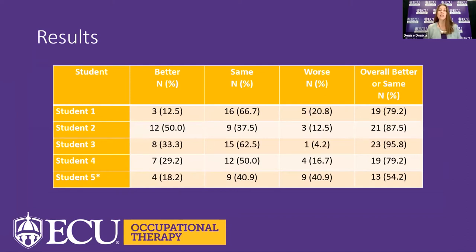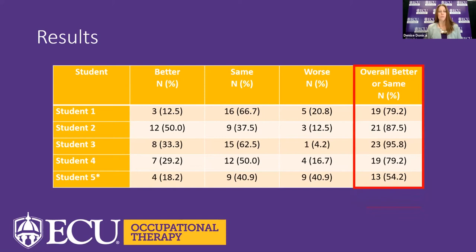Therefore we decided to look at each individual item and count how many ratings stayed the same, got better, or got worse. Student two had half of his ratings improved. Again, students who attended all sessions — two through four — showed more improvements than those who attended just a couple of sessions. The last column of the table showed a total of how many items out of 24 improved or stayed the same, giving us more information to aid our understanding.